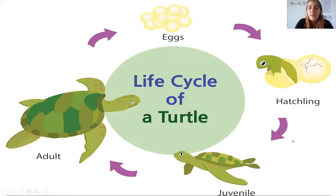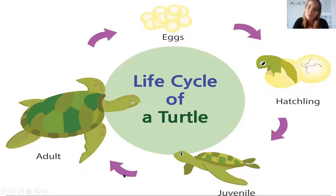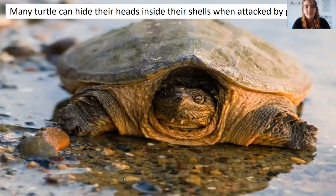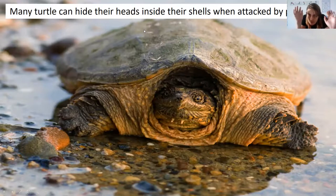Between the phase of being a grown-up turtle and still being a baby turtle, we call them juvenile turtles. Then they turn into adult turtles and the cycle starts all over again. Turtles can hide their heads inside their shells when attacked by predators — when something is trying to eat them, they just hide inside their shells.